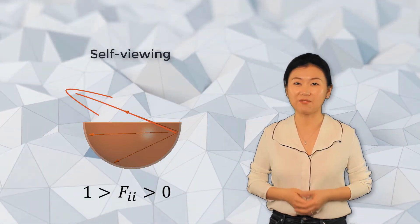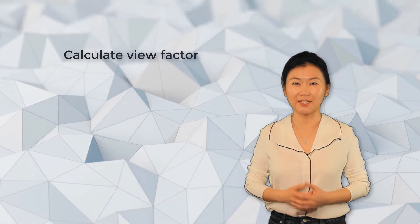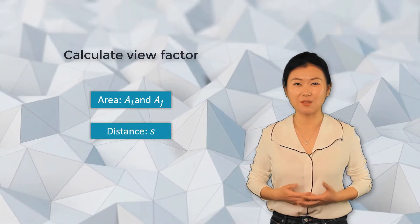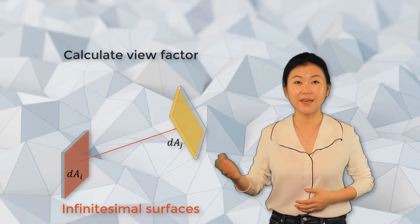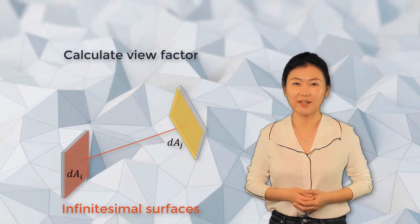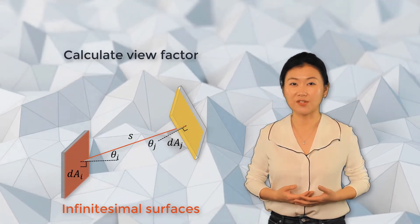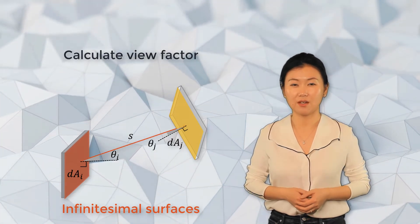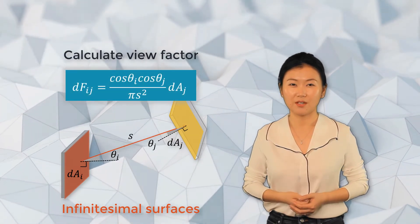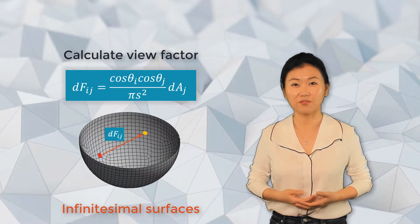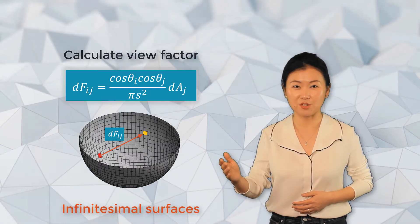To calculate view factor mathematically, we need to know the areas, distance between the two surfaces, and the angles between the surface normals. Consider two infinitesimal surfaces i and j with differential areas dAi and dAj. The distance between the two infinitesimal surfaces is s, and the angles between the surface normals are θi and θj respectively. The view factor from infinitesimal surface i to j can be calculated by this definition. It's worth mentioning that for simulation of radiation heat transfer problems, the finite element solver will calculate the differential view factor for each matched surface for the problem.